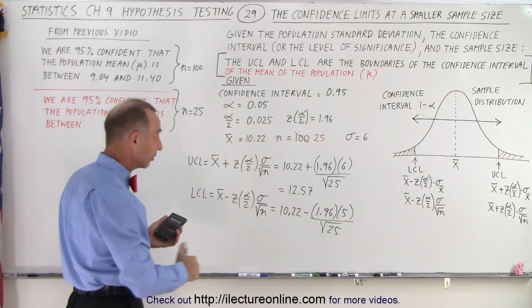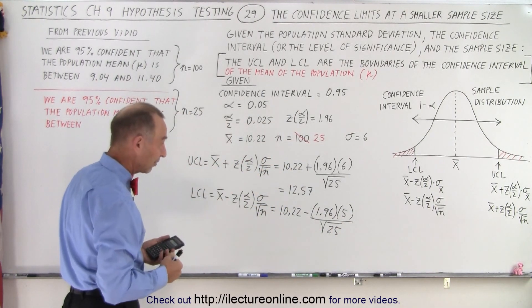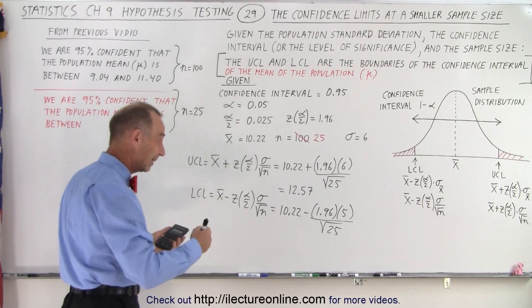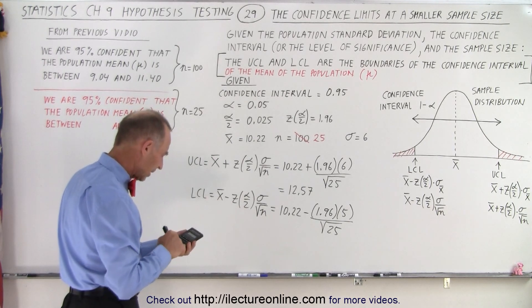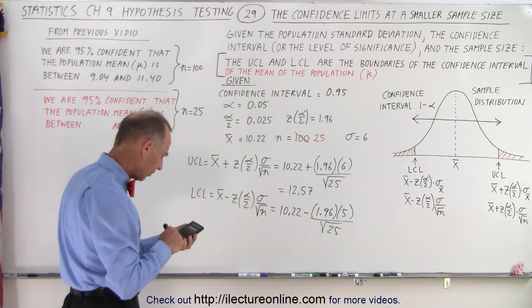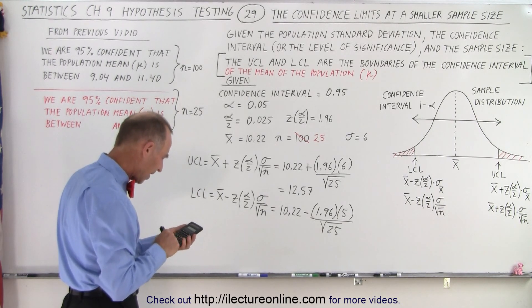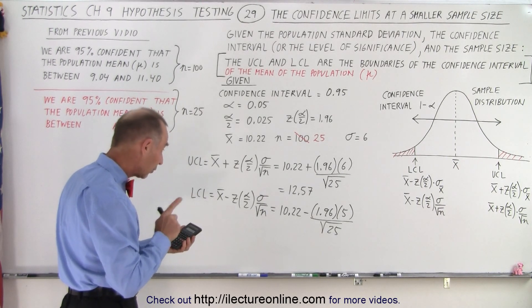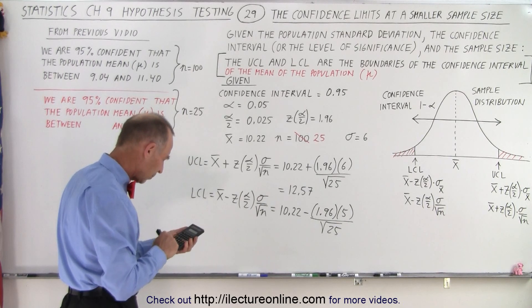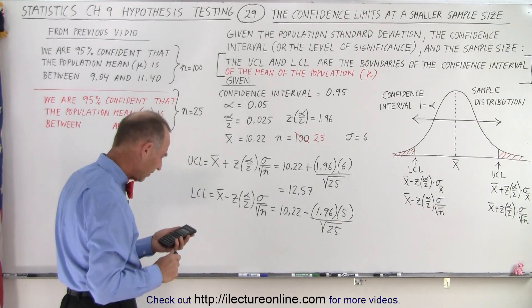Essentially we've doubled the errors because the square root of 25 is 5 and the square root of 100 is 10. So 1.96 times 6 divided by 5, and we're going to subtract that from 10.22 and we get 7.87.